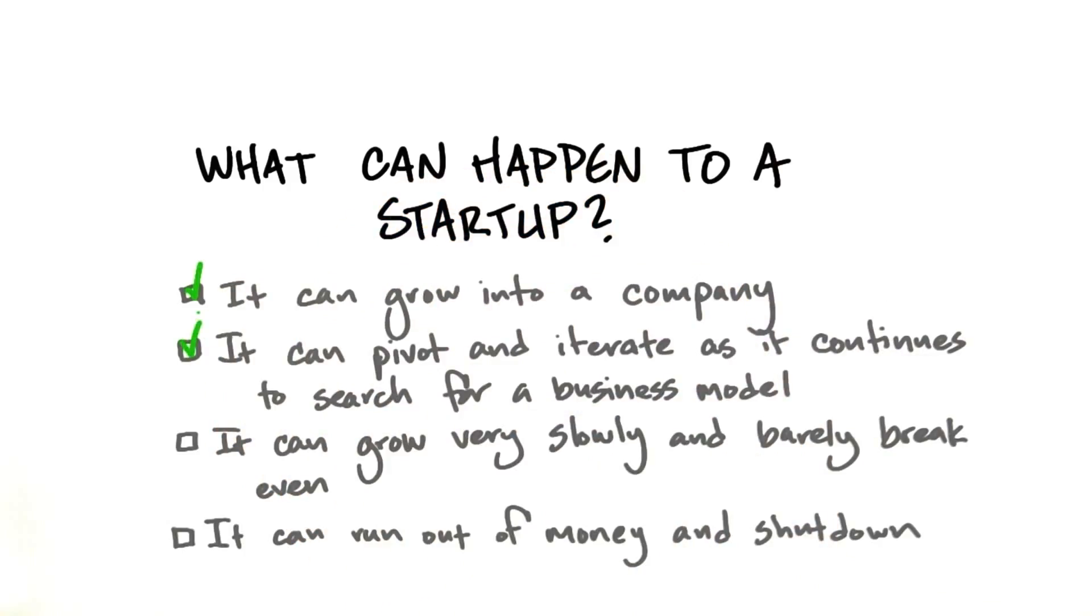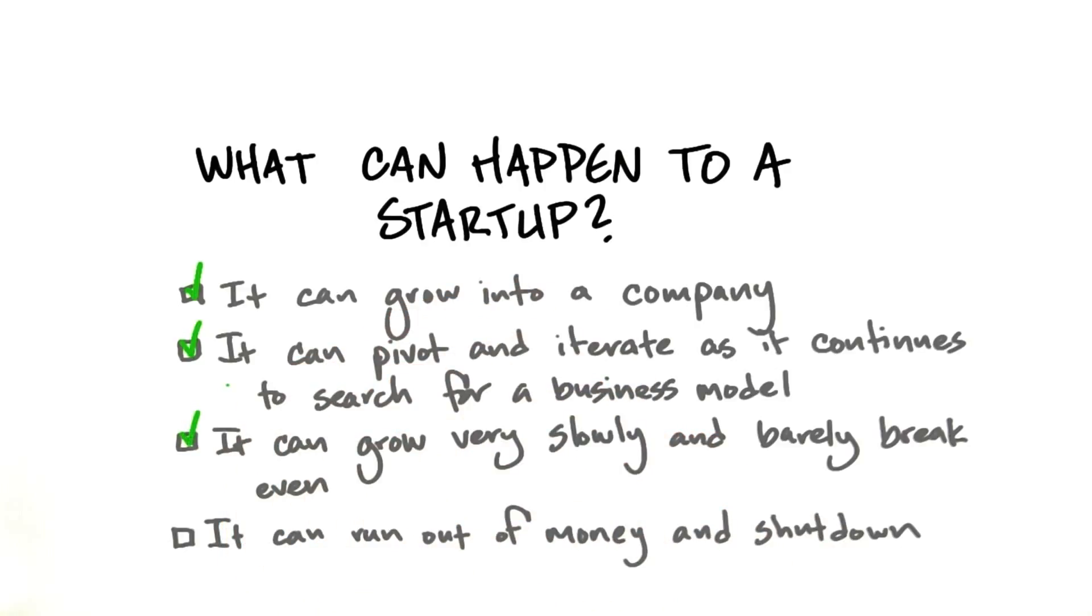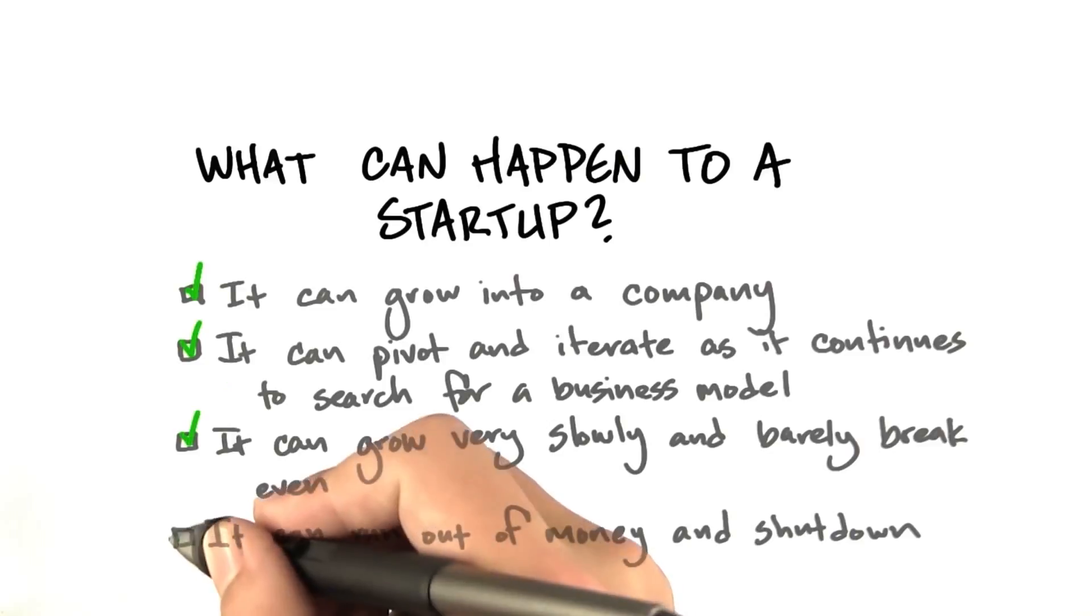Or two, you could still be pivoting and iterating as you continue to search for a business model. Or three, you could have found a business model but maybe one that isn't explosive growth, but you could be growing slowly and barely breaking even.